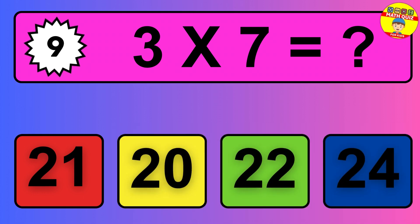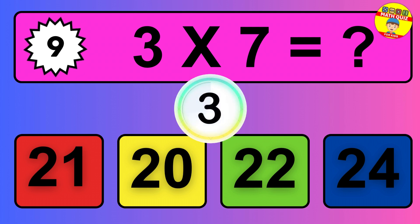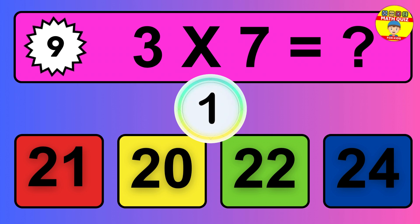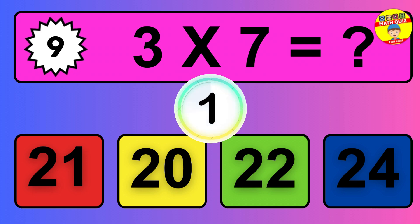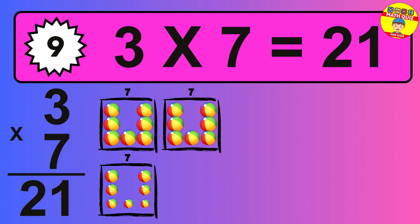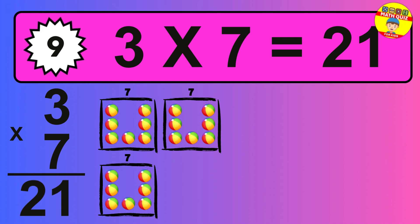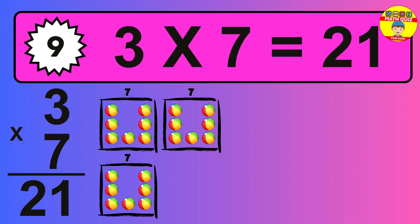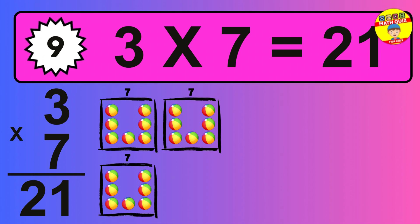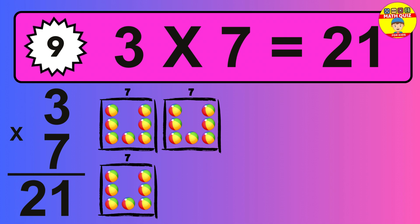Question 9. 3 times 7 equals what? So the answer is 3 times 7 is 21. To calculate, we have 3 groups with 7 balls each one. So how many balls do we have? 21 balls.